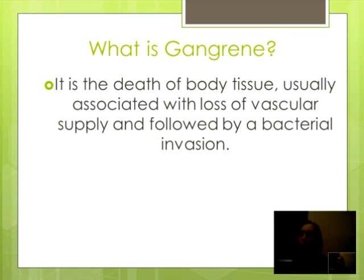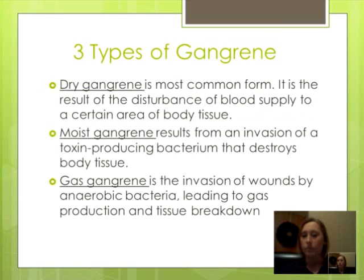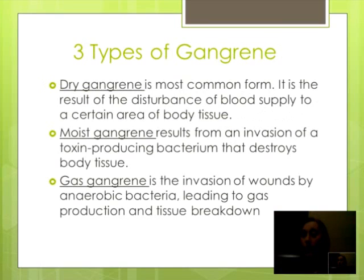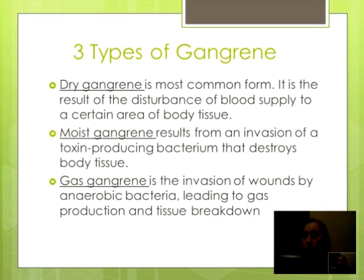Gangrene is the death of body tissue, usually associated with loss of vascular supply and followed by a bacterial invasion. There are three types of gangrene. Dry gangrene is the most common form found; it is the result of the disturbance of blood supply to a certain area of body tissue. Moist gangrene results from an invasion of a toxin-producing bacterium that destroys body tissue. Gas gangrene, which is the focus of this presentation, is the invasion of wounds by anaerobic bacteria leading to gas production and tissue breakdown.